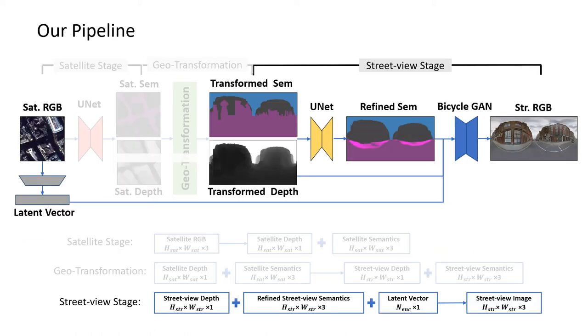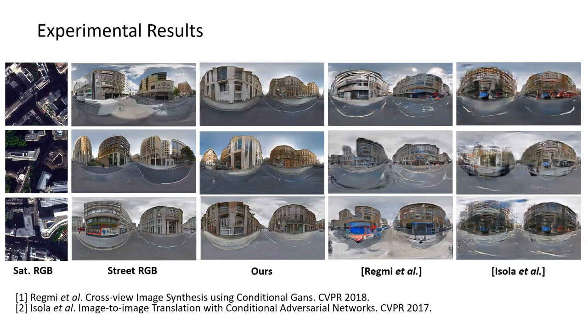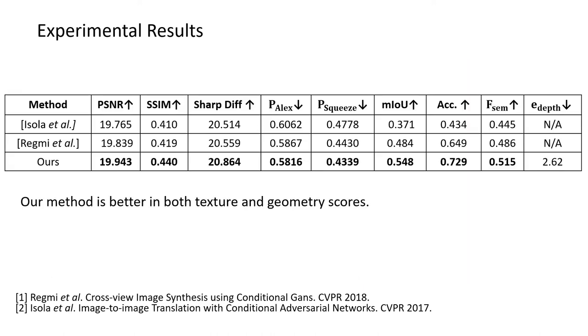For the street view stage, we first refine the transformed semantic image, and then use a bicycle GAN to generate street view images. Experiments show that our method can generate more realistic street view images than other methods and also achieves best results on established quantitative performance measures.